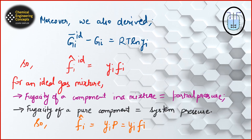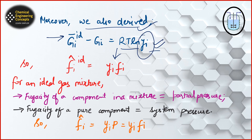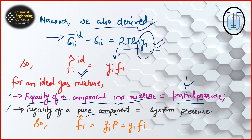Whenever you see a bar above any property, it refers to the mixture partial molar property. The cap notation represents property in an ideal mixture. So the fugacity with a cap represents fugacity in an ideal mixture, while without the cap it's for the pure component. We also derived that the Gibbs free energy change equals RT ln yi. Comparing the ln terms, we get: yi × fi = f̂i_id. For ideal gas mixtures, the fugacity of a component in the mixture equals its partial pressure (yi × P), and for the pure component it equals the system pressure.